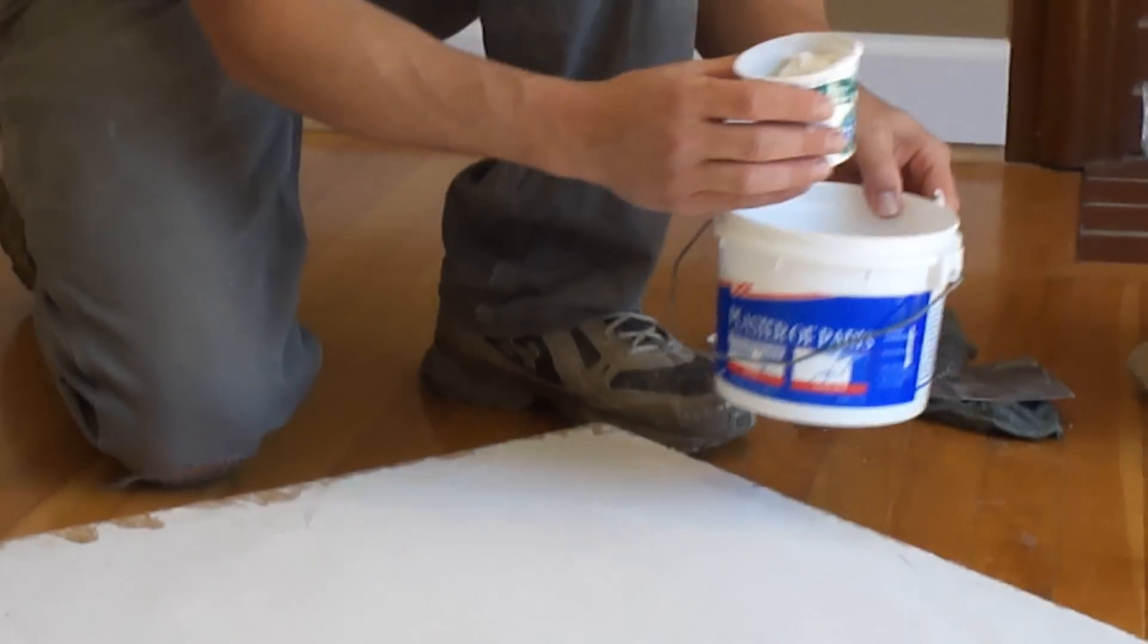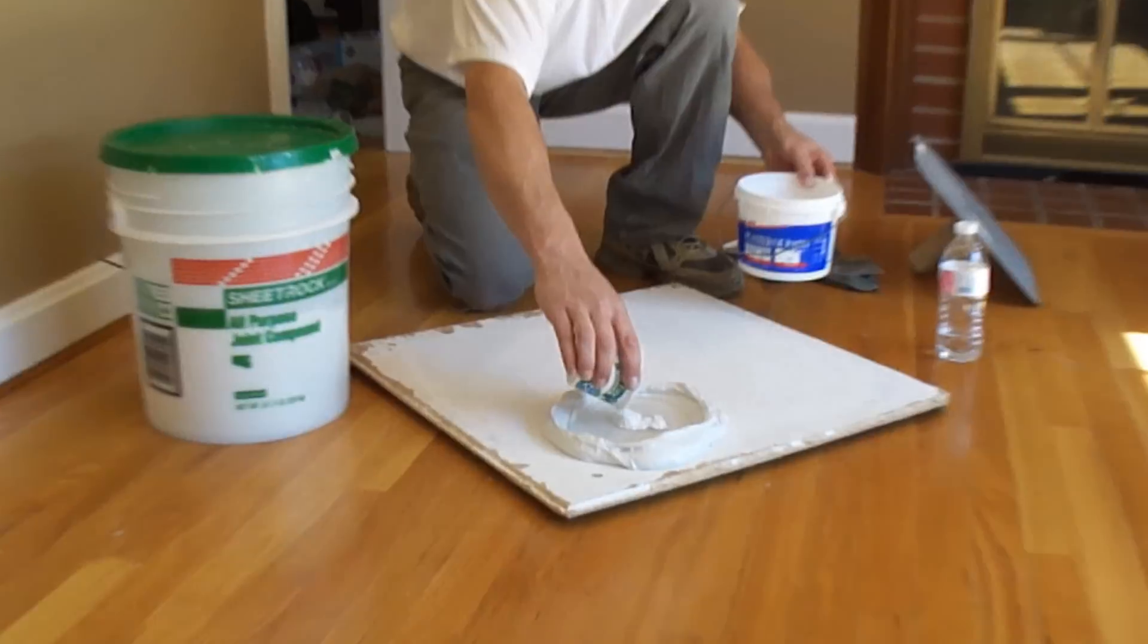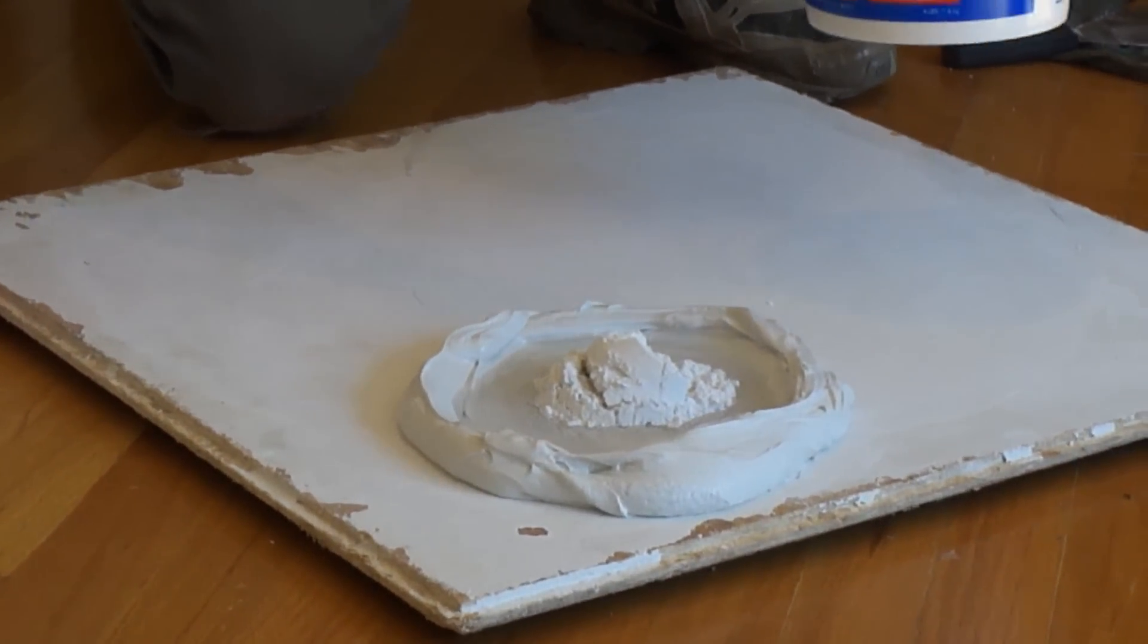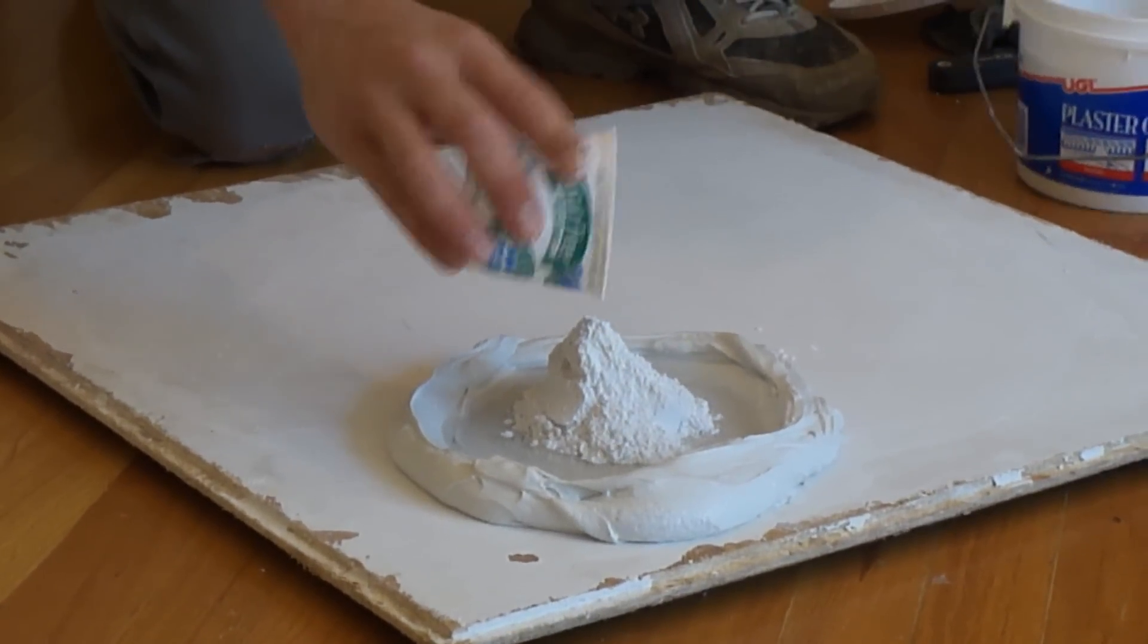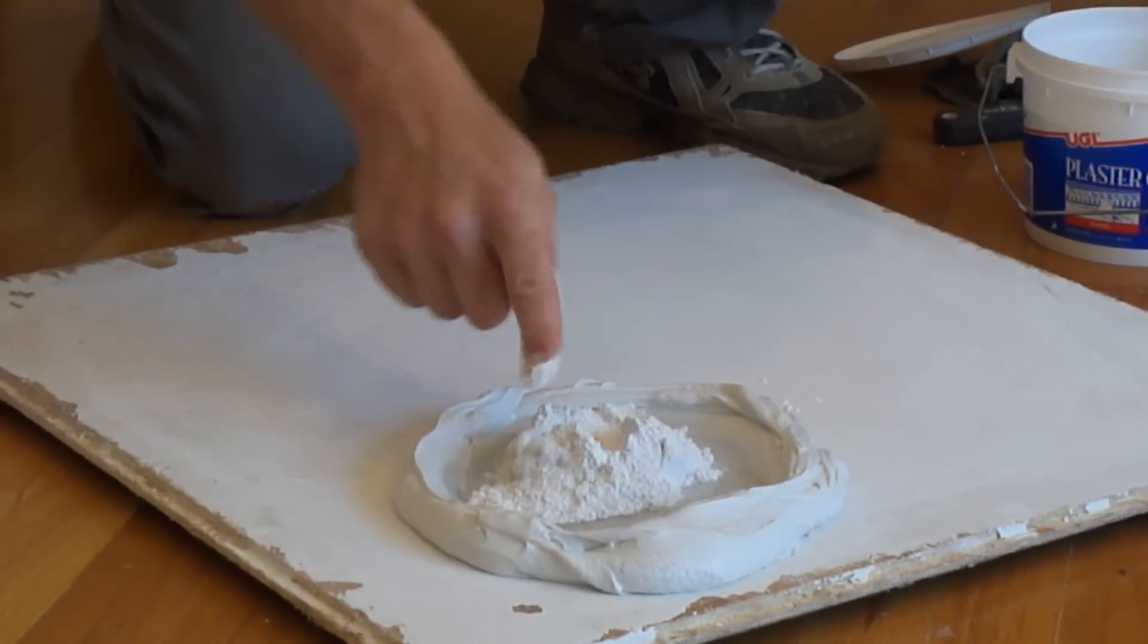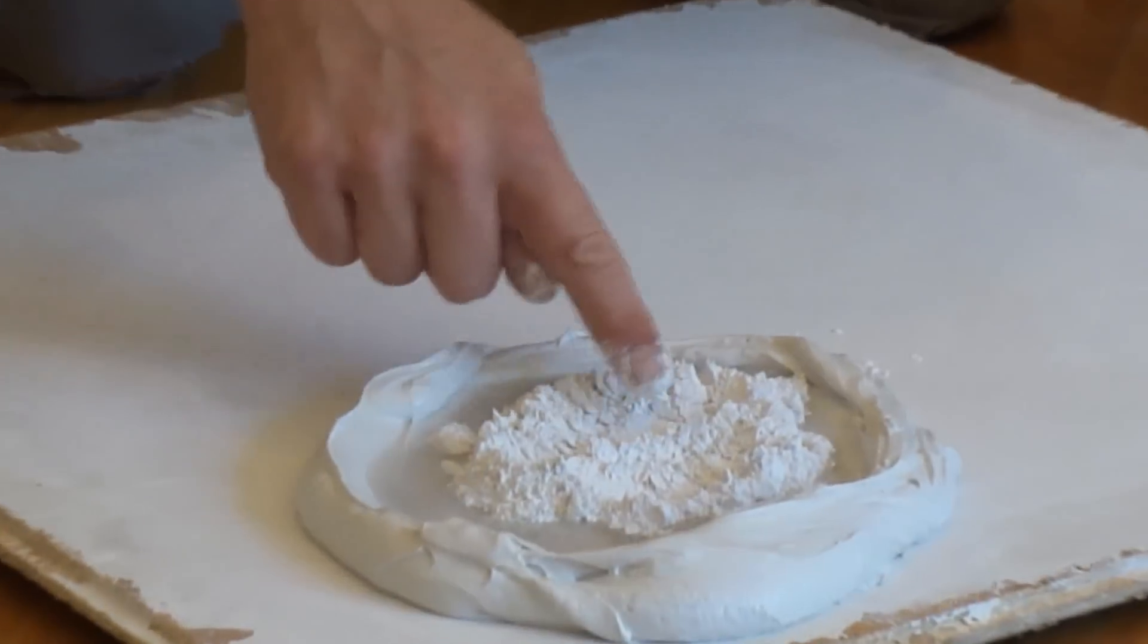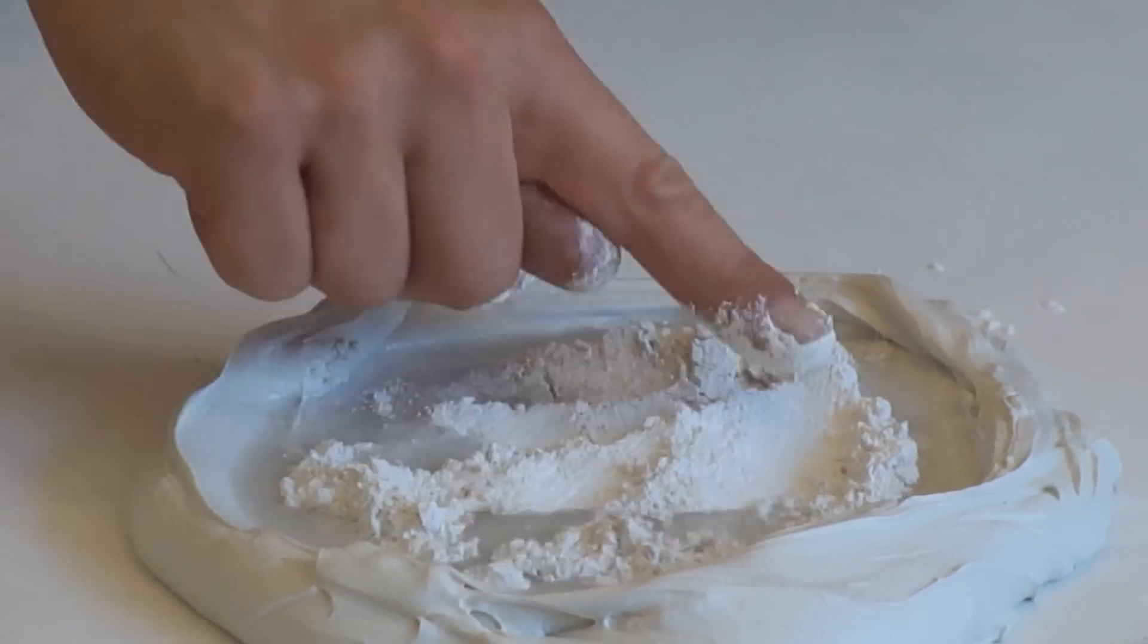And then in here I have plaster of Paris here, which is the harder, and I'm going to add it to the center of the pie here. And then with your finger, just work it out to the edges and try not to get it on the outer banks of the all-purpose mud.